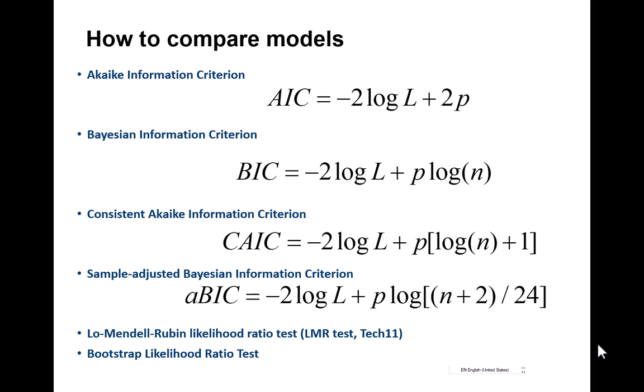information indices. I'll explain some here: the Akaike information criteria, the Bayesian information criteria, consistent Akaike information criteria, sample-adjusted Bayesian information criteria, Lo-Mendell-Rubin likelihood ratio test,